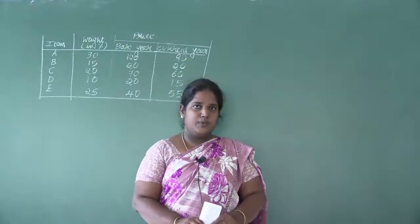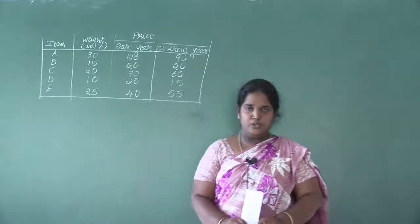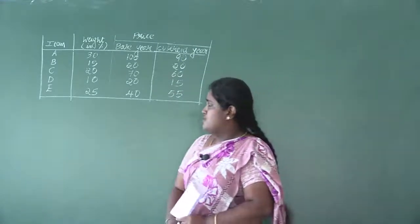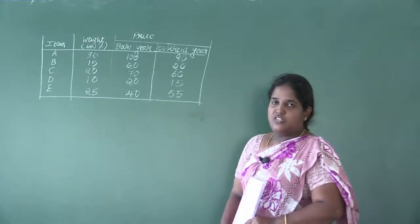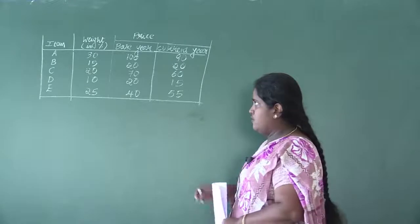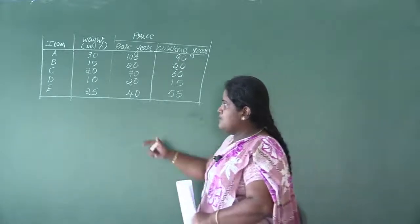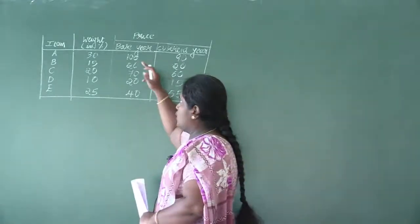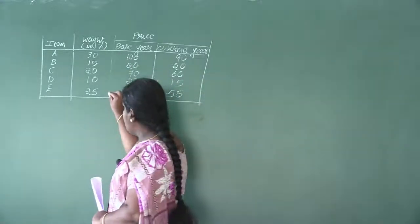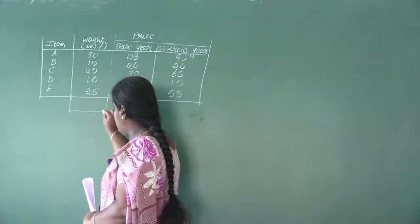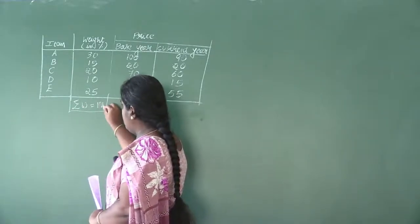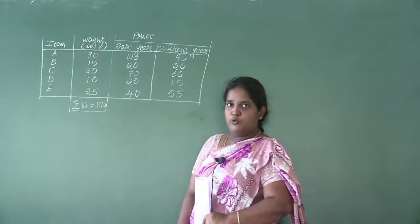Good morning students. Today we are starting with the new method: weighted geometric mean. In the previous class we studied weighted arithmetic mean, so next is the weighted geometric mean. I have written the question here. Items we have up to E, then weight is given in terms of percentage, meaning the total of the weight values will be 100.